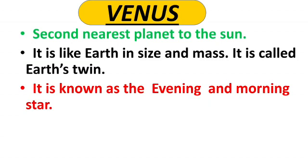Venus shines so brightly that it is the first star to appear in the sky after sunset and the last to disappear before sunrise. Due to this phenomenon during morning and evening time, this planet is referred to as the morning and evening star.